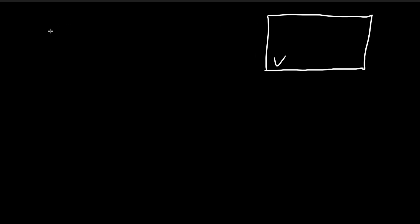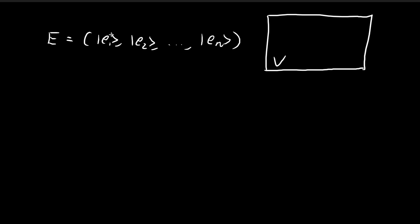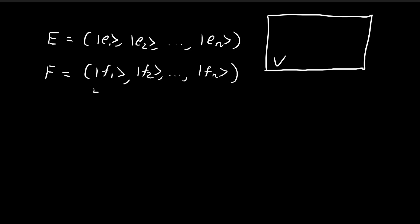Let's say we have a vector space V, and from this vector space I'm going to pull out a set of vectors called E, containing n vectors. These n vectors will form a basis for this vector space, meaning any other vector within V can be expressed as a linear combination of these vectors, and all these vectors are linearly independent. We also have another set of vectors called F, also containing n vectors, which also forms a basis for the vector space V. So these are two different bases for the same vector space V.